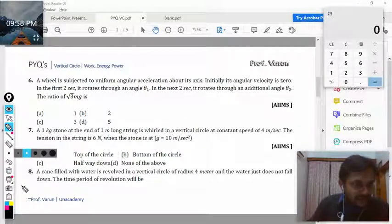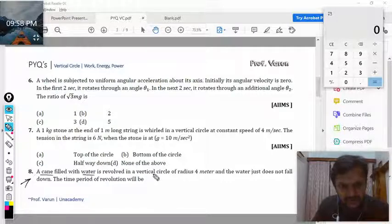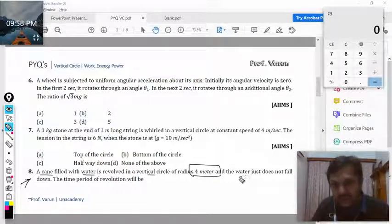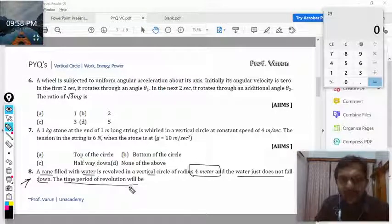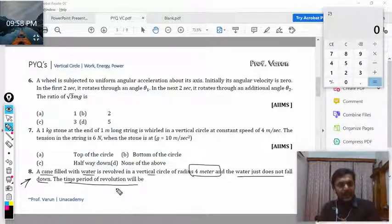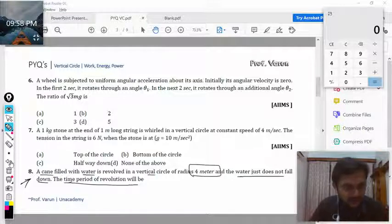Quickly moving to question number eight. A can filled with water is revolved in a vertical circle of radius 4 meters. Water just does not fall down. The time period of revolution will be? We must see the time period of the revolution.